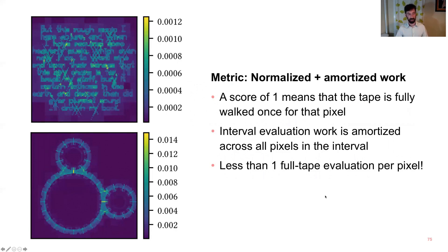And so one very cool metric we can look at is the amount of work that's being done per pixel, where if we normalize so that walking through the tape fully, evaluating every clause is a score of one, then we amortize interval evaluation across every pixel within that interval, we end up with something like this, where you end up walking the tape much less than once per pixel, because both we have amortization over intervals, and then we also have the tapes getting shorter and shorter as you recurse down the tree. So this is showing that we're walking the tape less than a thousandth, on average, per pixel, and this is what makes the algorithm work.